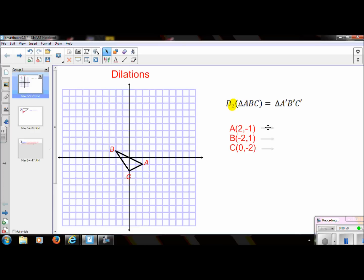When we do a dilation, we just multiply every single XY coordinate by this scale factor. So if I multiply 2 times 2, I get 4. And if I multiply negative 1 times 2, I get negative 2. I'm going to do the same thing for every set of coordinates.